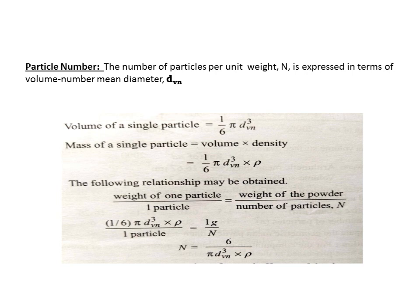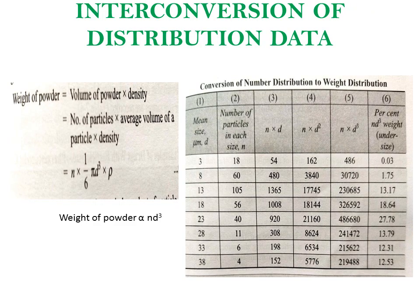The mass of a single particle equals volume times density — weight equals density times volume. Next is the interconversion of distribution data. In the tabular column, raw data is given with mean size and number of particles in each size range. Here you are trying to convert the number distribution into weight distribution.